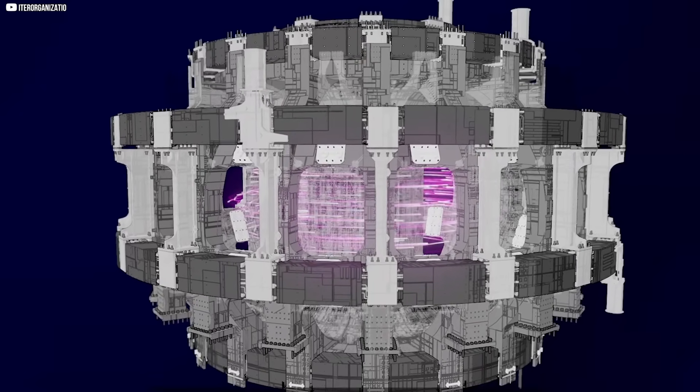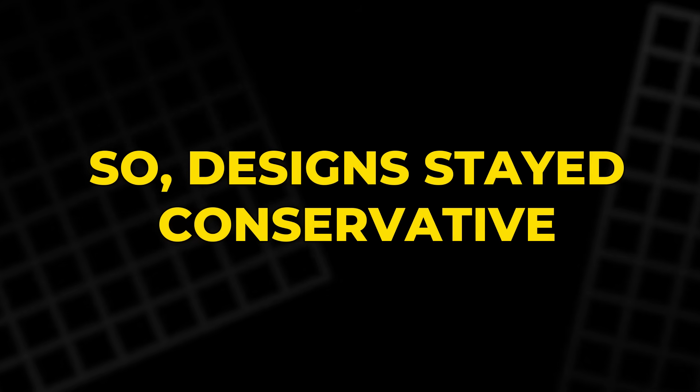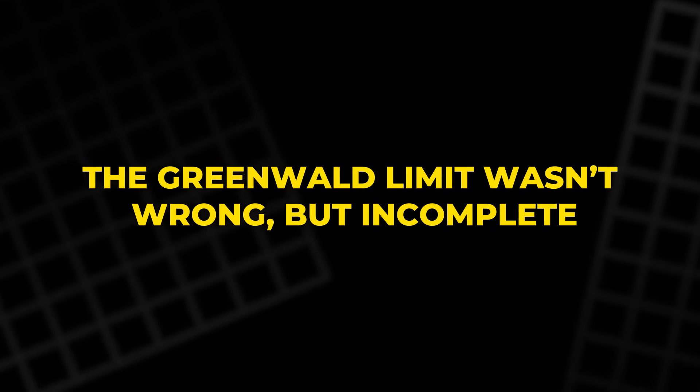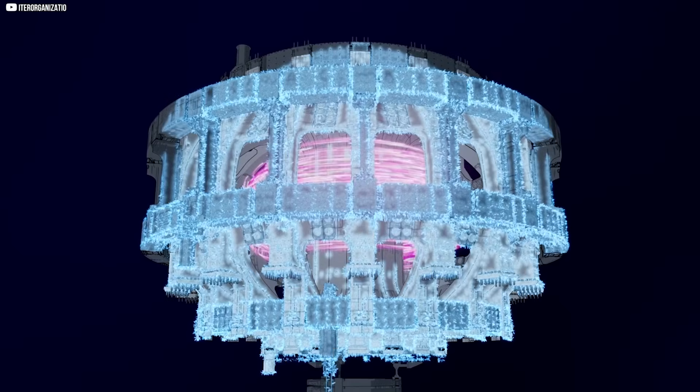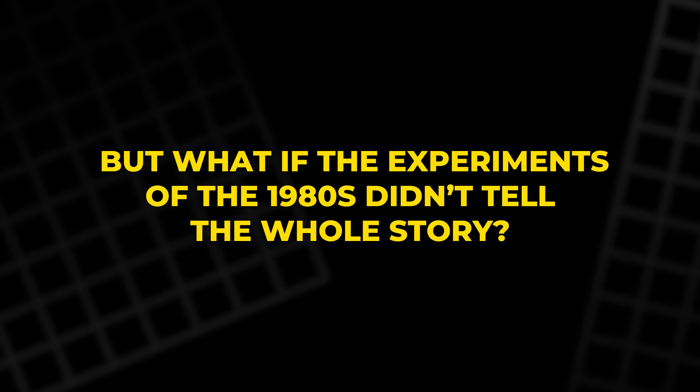The logic was clear: if you cross the density limit, plasma becomes unstable. So designs stayed conservative. Greenwald's equation set a ceiling that no one dared to question. Until now. For decades, the fusion community has built around this invisible wall. But what if the experiments of the 1980s didn't tell the whole story?